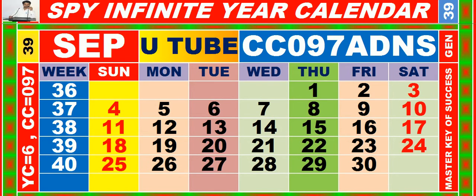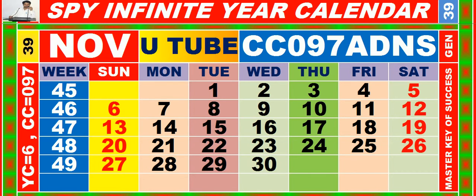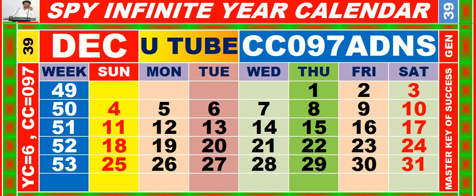Calendar for the month of September having calendar code equal to 097. Calendar for the month of October having calendar code equal to 097. Calendar for the month of November having calendar code equal to 097. Calendar for the month of December having calendar code equal to 097.